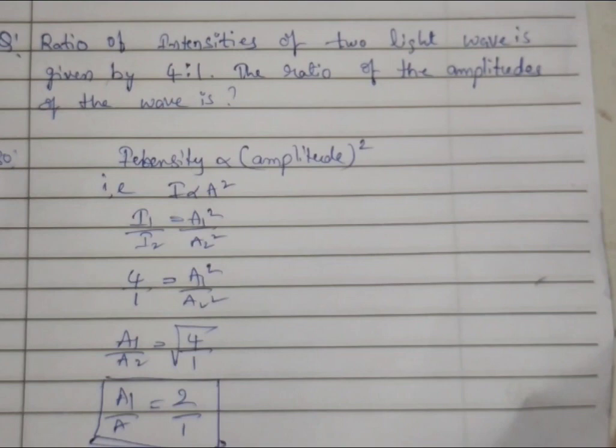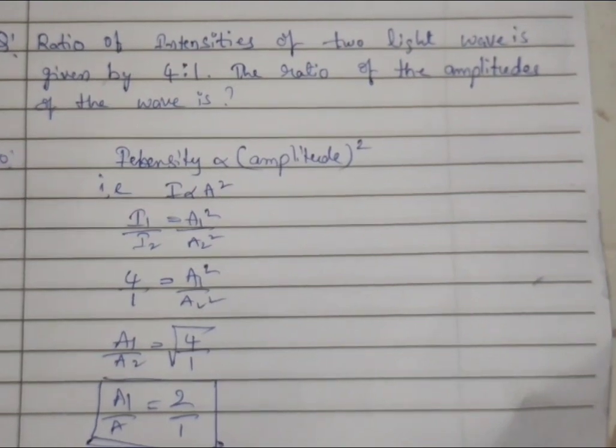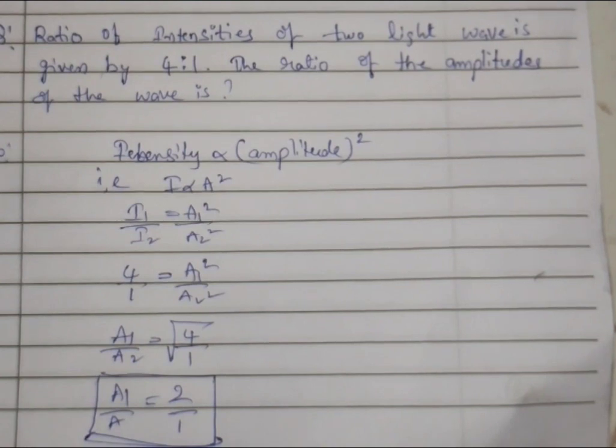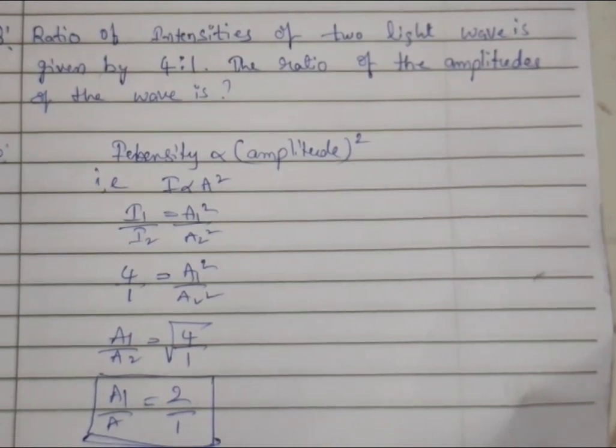So that is equal to A₁ squared by A₂ squared. So 4 is to 1 equals A₁ squared by A₂ squared. So we will get A₁ by A₂ is equal to root 4 is to 1.